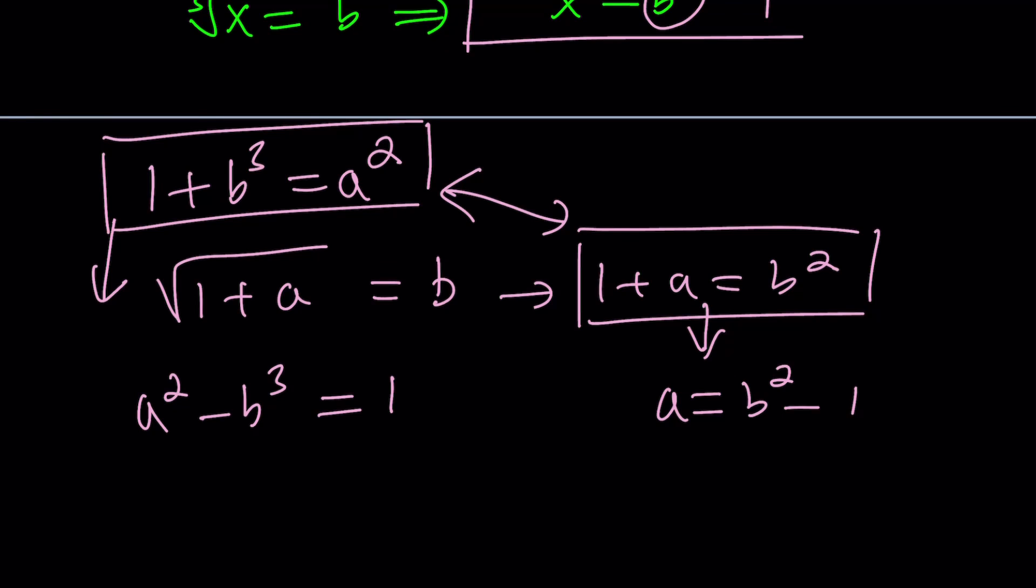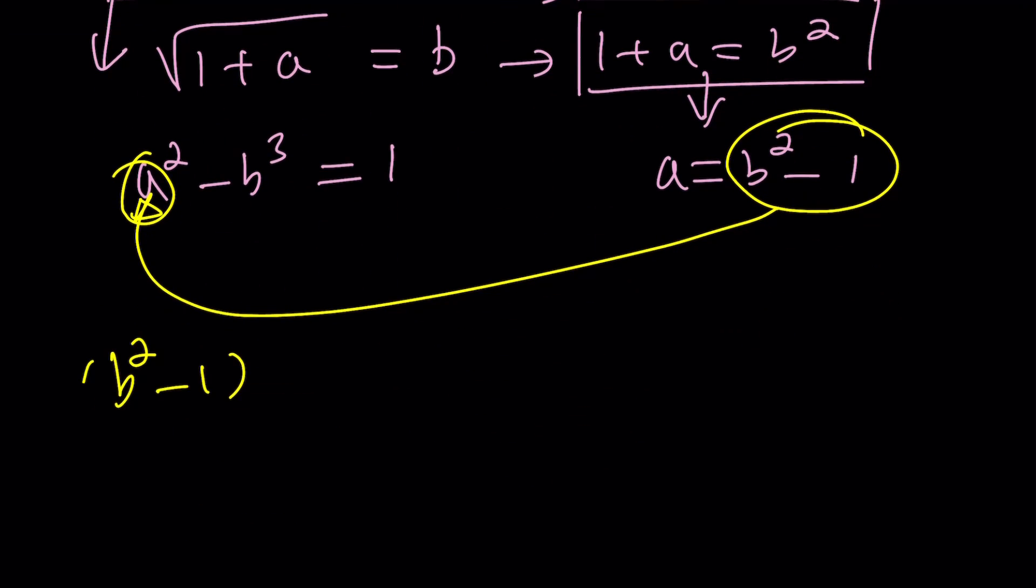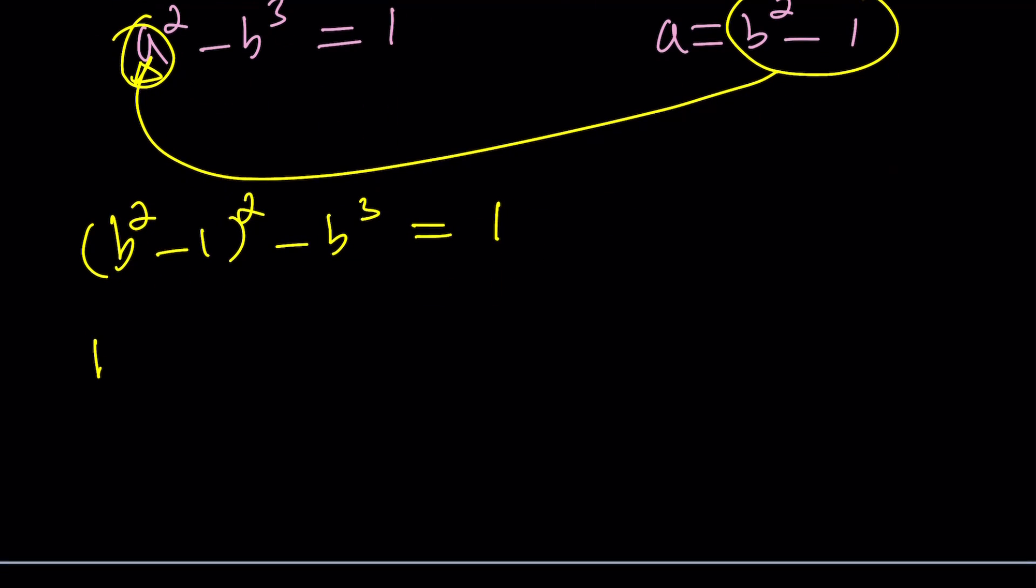Now we can replace this a with b squared minus 1 here. That gives us b squared minus 1 squared minus b cubed equals 1. By expanding, I'm going to show you an alternative: b to the fourth minus 2b squared plus 1 minus b cubed equals 1. Now if the 1's did not cancel out, this would be a little harder. But in this case, we don't have to worry about it.